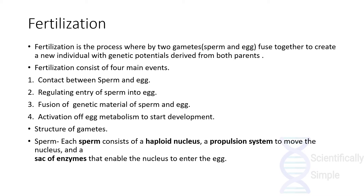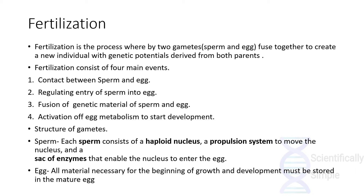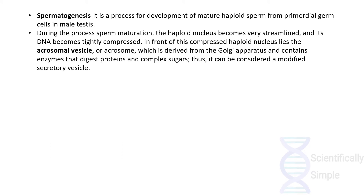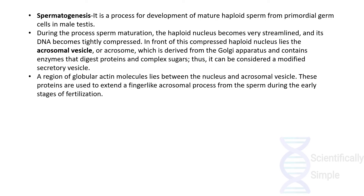The gametes of both sperm and egg have a well-defined structure. The sperm consists of a haploid nucleus, a propulsion system (the tail), and a sac of enzymes called the acrosome that helps it to enter the egg. The egg consists of all the necessary material for the beginning of growth and development. The acrosome is derived from the Golgi apparatus and contains enzymes that digest proteins and complex sugars. A region of globular actin molecules lies between the nucleus and the acrosomal vesicle, used to extend finger-like acrosomal processes during early fertilization.